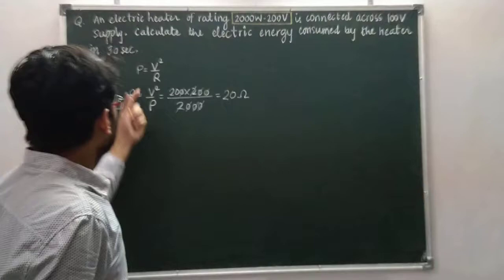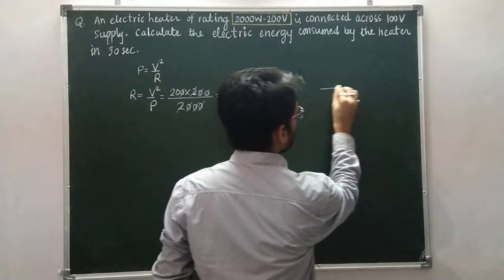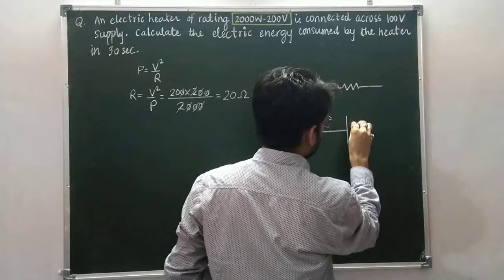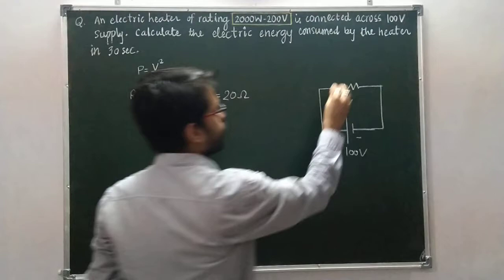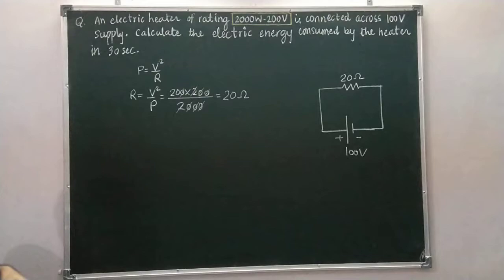First, draw the diagram. We have an electric heater connected across a 100 V supply. The electric heater has a resistance of 20 Ohm.